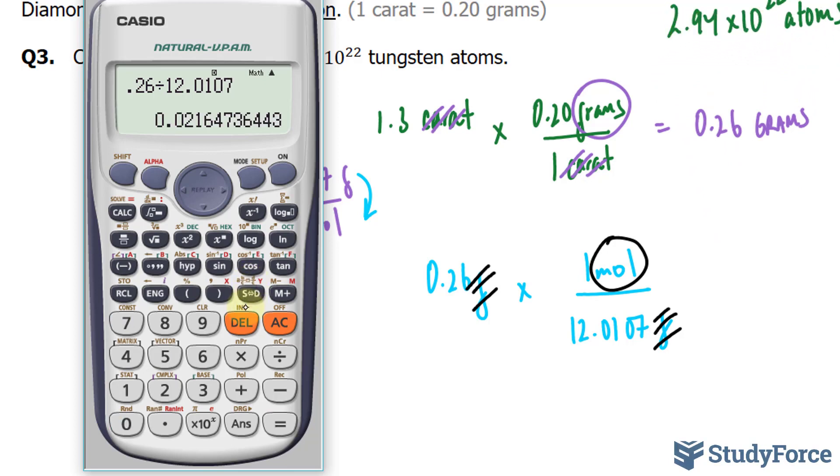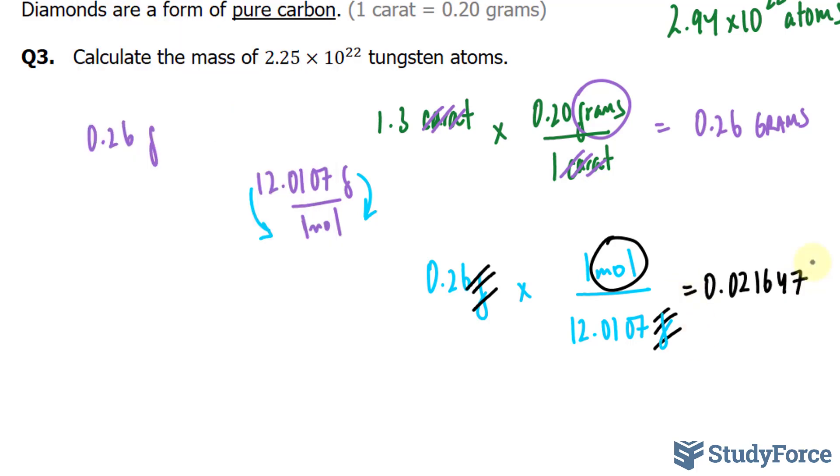This gives us 0.0264. Everything after this 1 is insignificant, but I will continue to write up until this 7, just for good measure, because we still have one more calculation after this. We can't round right now, you can't round halfway in the question. So I'll write down 0.021647, and I'll put a dot underneath the last significant figure.